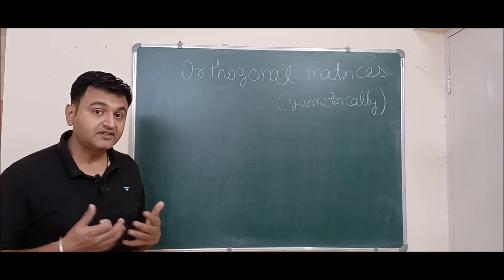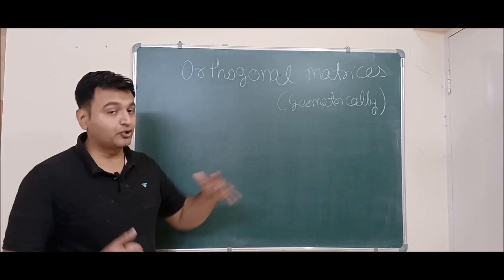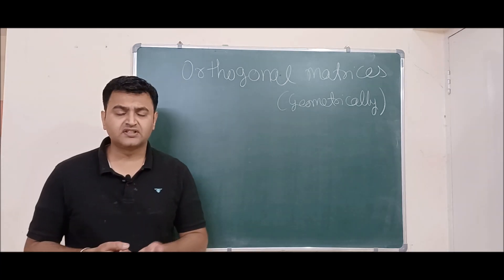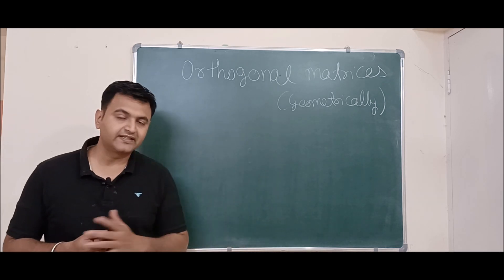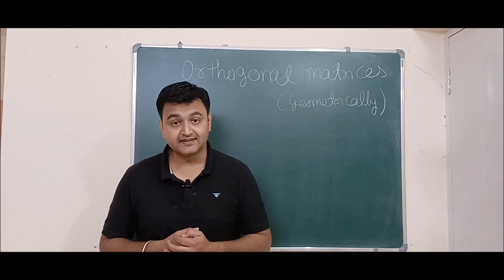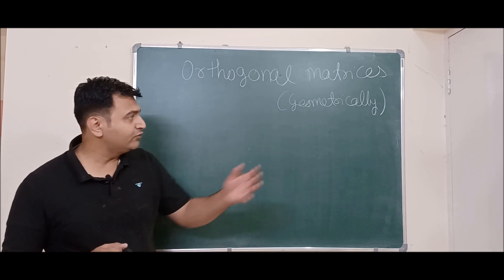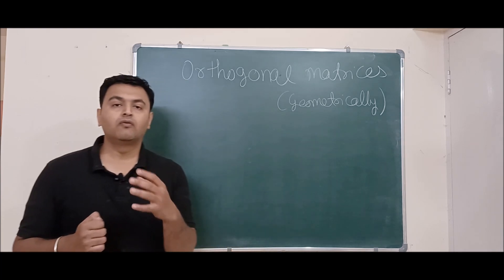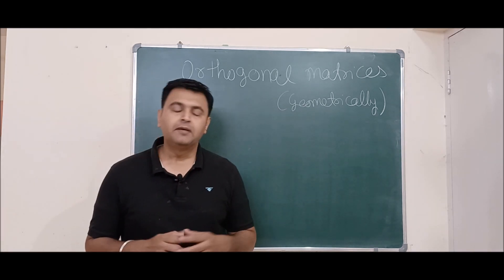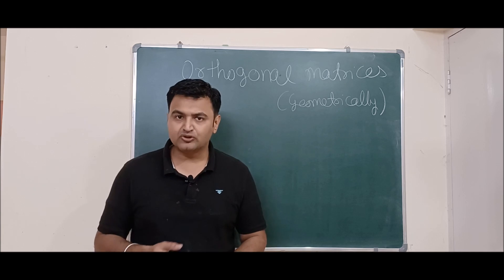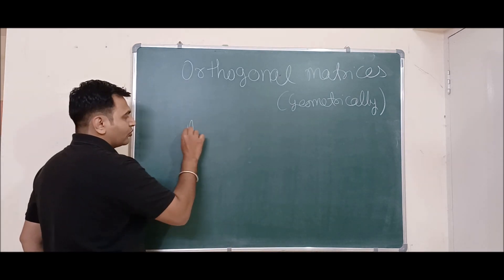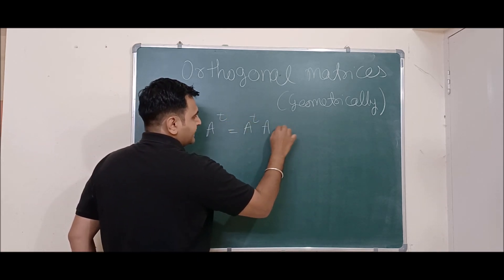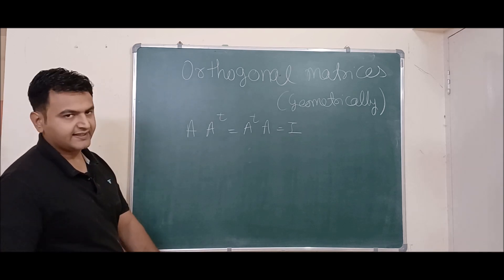Today we are going to see what is a good way to define orthogonal matrices. Usually in an interview, people ask many definitions, and one very standard definition is: what are orthogonal matrices? People say a square matrix is said to be orthogonal if A times A-transpose, or A-transpose times A, is an identity matrix. That's the correct definition.